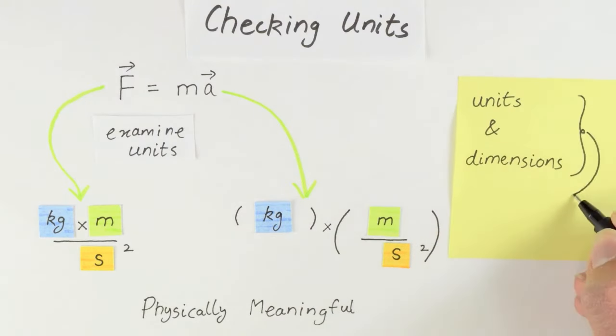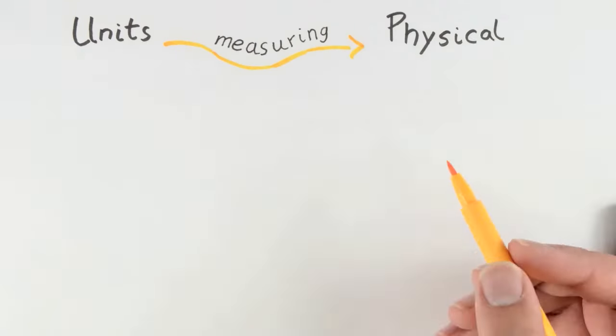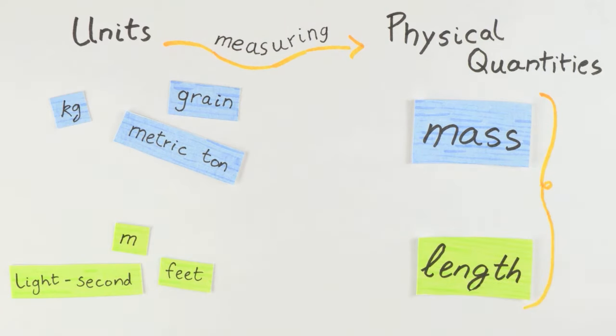However, it's good to keep in mind the distinction that units refer to a particular way of measuring physical quantities, and dimensions refer directly to the physical quantities themselves.